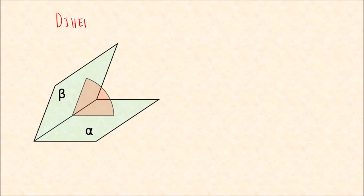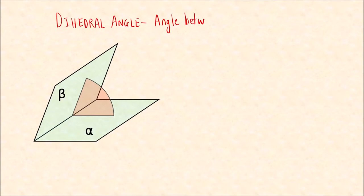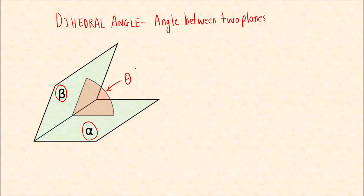What is a dihedral angle? It is an angle between two planes. As you can see in the image, there is one plane beta and another plane alpha. The angle between the two planes, shown in orange, is theta — this is called a dihedral angle.